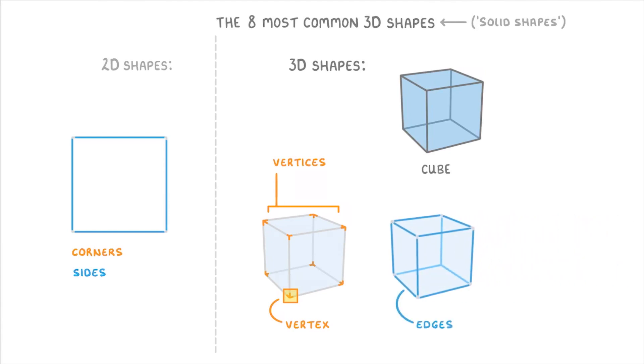Then they also have edges, which are these lines in between the vertices, and faces, which are the flat surfaces between the edges.